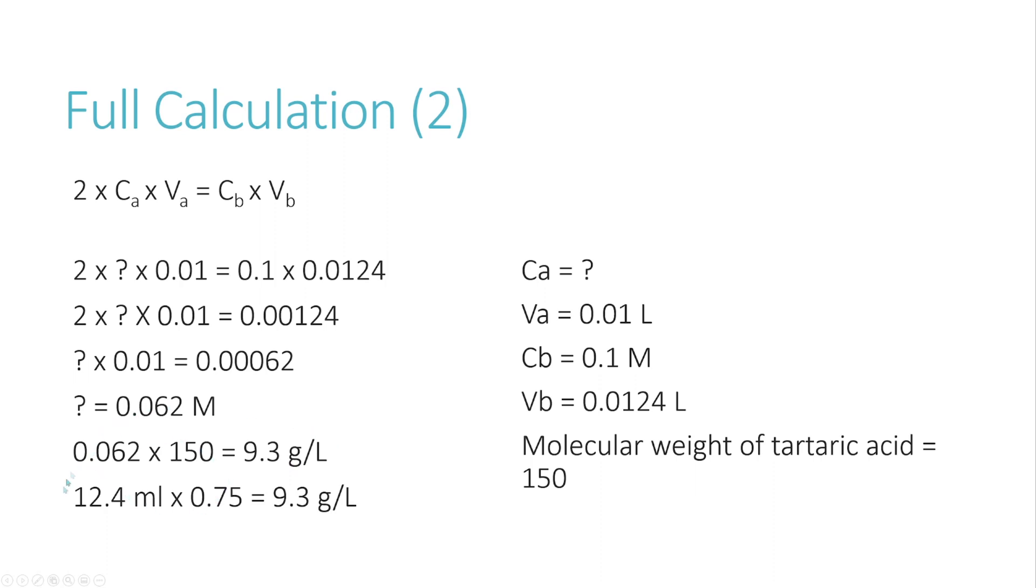And you'll notice that if we go back to our example as it was before at the beginning, when we times just by 0.75, we get the same answer. So all of this long calculation, what it boils down to is times the titer by 0.75. But it assumes we have a concentration of base of 0.1 molar, and that we're using 10 milliliters of sample.